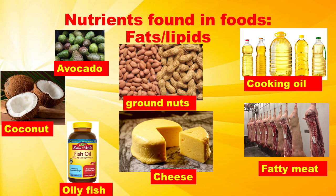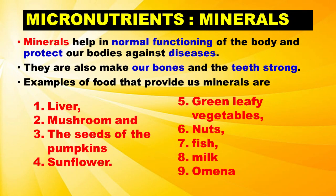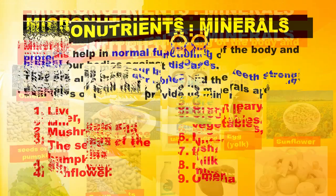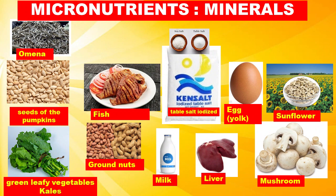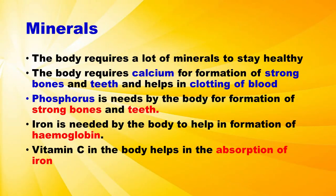Minerals help in the normal functioning of the body and protect our bodies against diseases. They also make our bones and teeth strong. Examples of foods that provide minerals are liver, mushroom, seeds of pumpkin, sunflower, green leafy vegetables, nuts, fish, and milk. The body requires calcium for the formation of strong bones and teeth and helps in clotting of blood. Phosphorus is needed for the formation of strong bones and teeth. Iron is needed to help in the formation of hemoglobin.